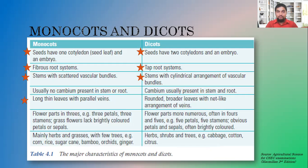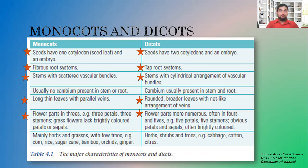Another important difference is that monocots have long, thin leaves with parallel veins, whereas dicots normally have rounder, broader leaves with a net vein arrangement. You can also tell the difference by the flower parts: in monocots the petals appear in threes, whereas in dicots the flower parts are more numerous — petals may appear in fours and fives. You should be able to name some examples of monocots and dicots.